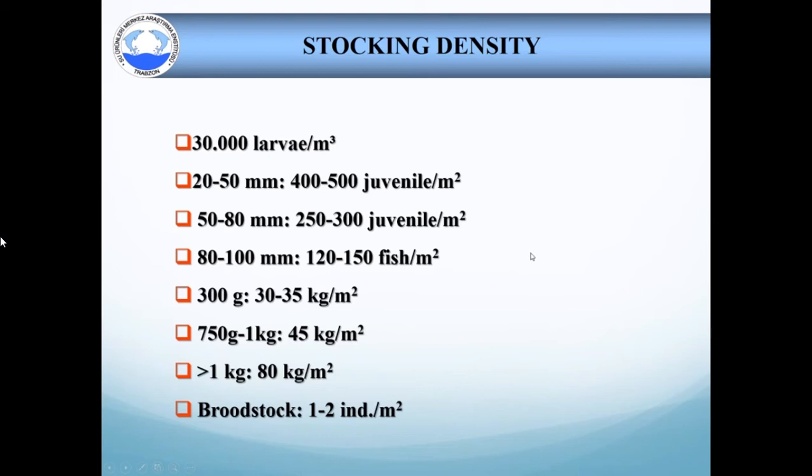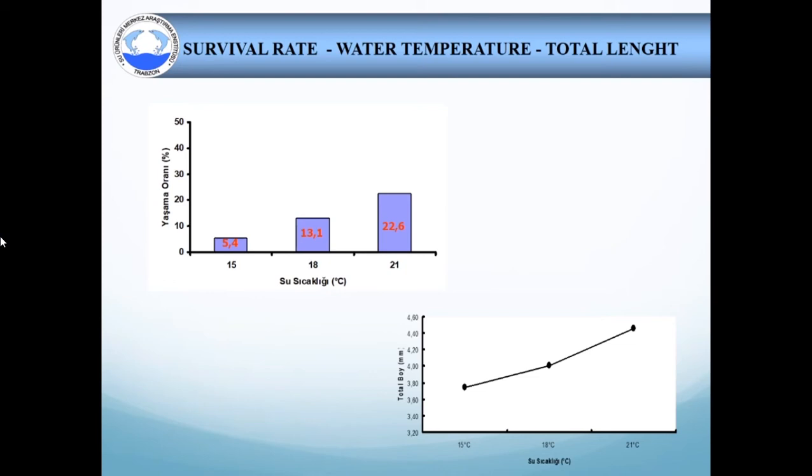This is another experiment on survival rate, water temperature and total length. Larvae are less resistant to a change of water temperature during the early stage. The water temperature of larval tanks should be the same as that of the incubation tank. After stocking, the water temperature is gradually increased from 15 to 21 degrees Celsius in four days. As you see, the optimum temperature in terms of survival rate and total length is 21 degrees. This is survival rate, and this is total length.